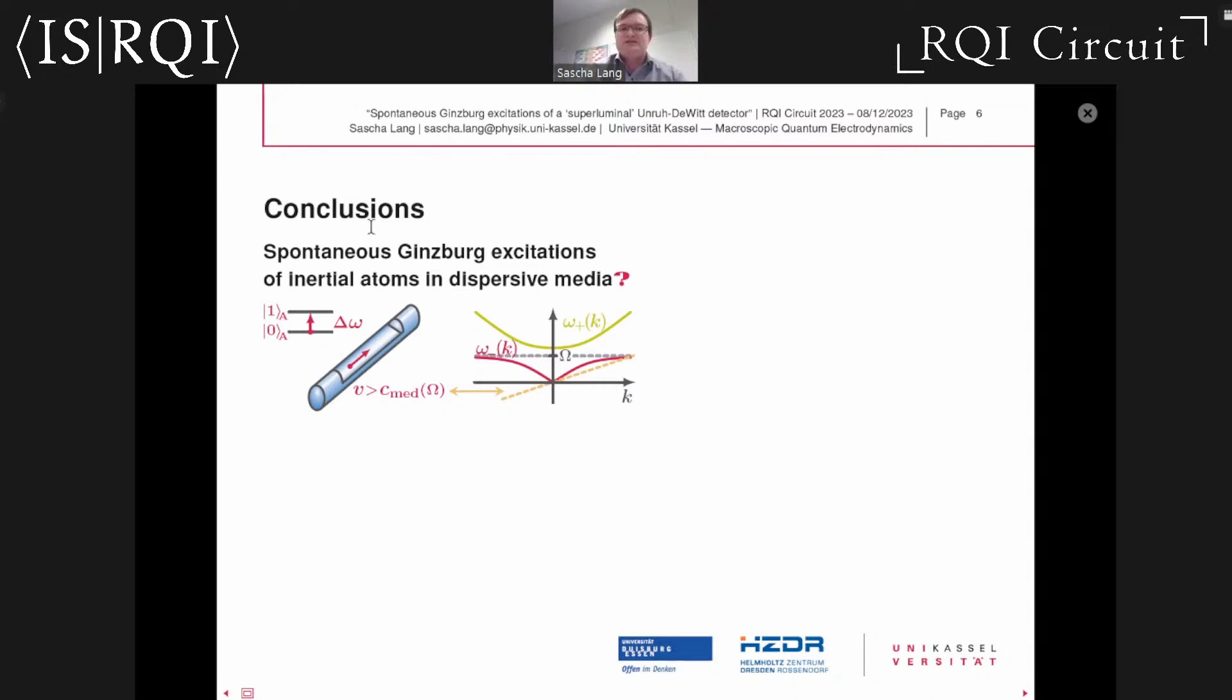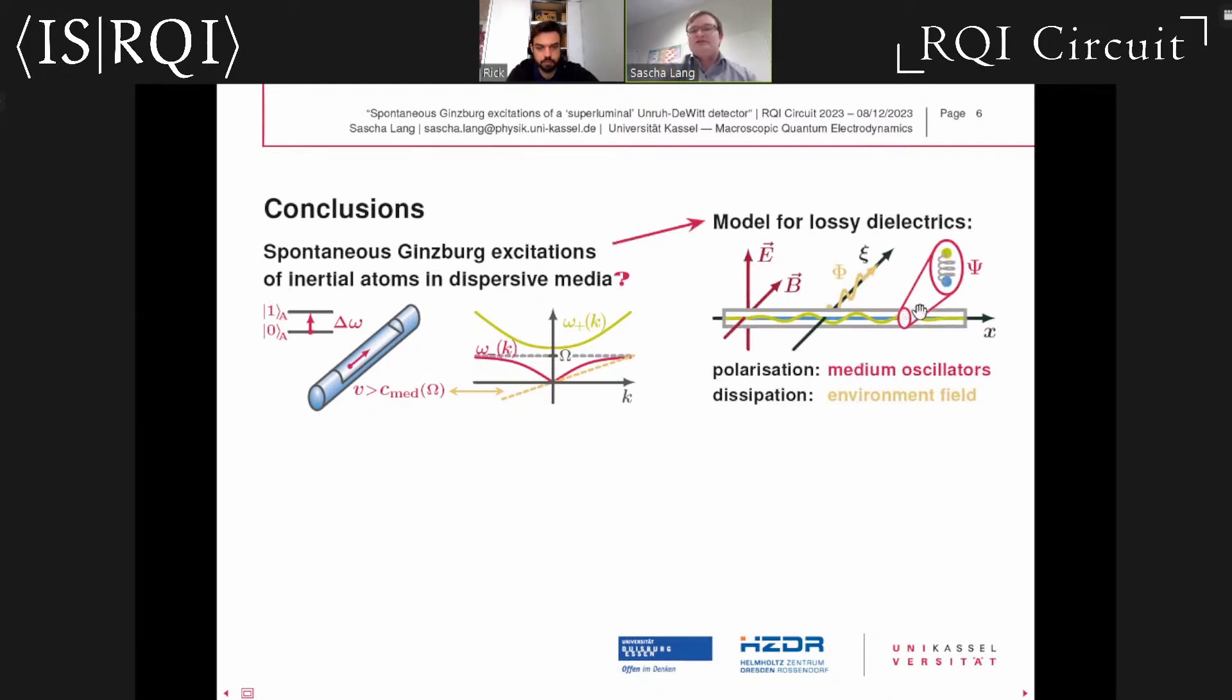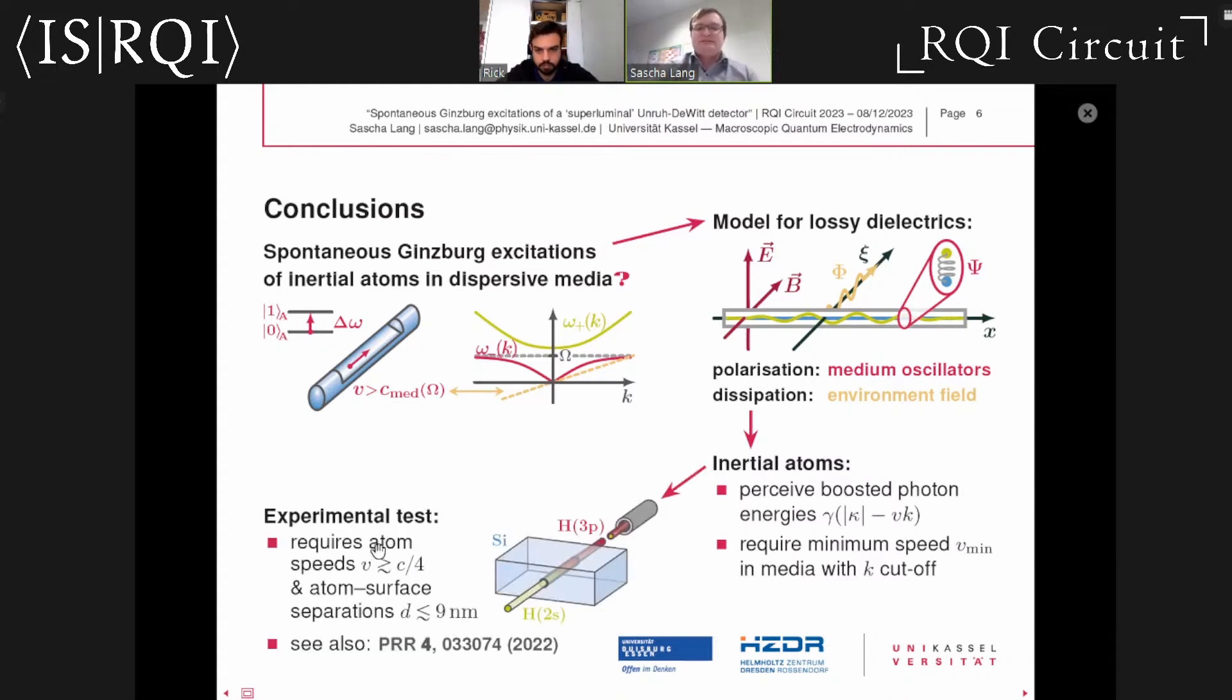Let me conclude with a few take-home messages. We considered a scenario where inertial atoms move through a dispersive medium and asked whether they can undergo spontaneous Ginzburg excitations. This question was inspired by the observation that close to medium resonances, phase velocities of quantum fluctuations grow relatively small, so might be smaller than atom speeds. In this parameter regime, dispersion and dissipation play a role. Therefore, I introduced a model for those properties, and we were then able to study inertial atoms moving through dispersive and dissipative dielectrics. We found that indeed those atoms can perceive Lorentz boosted energies which may grow negative, which could give rise to Ginzburg excitations. But in realistic media with a wave number cutoff, a certain minimum velocity has to be reached. In a real experiment, this minimum velocity is on the order of a quarter of the speed of light, which makes such an experiment very challenging but potentially feasible. With that, thanks a lot for your attention.